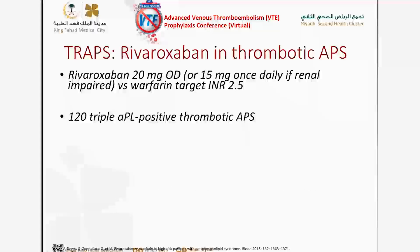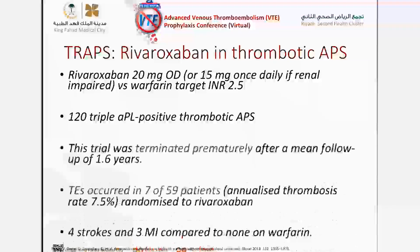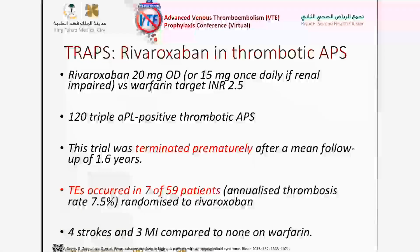More trials followed. TRAPS evaluated rivaroxaban in thrombotic APS — using 20 mg once daily (or 15 mg with renal impairment) versus warfarin targeting INR 2.5. 120 triple-positive thrombotic APS patients were included. Unfortunately, this trial was terminated prematurely because more thrombotic events occurred — in seven out of 59 patients — and these were more arterial: four strokes and three MIs, compared to none on warfarin therapy.